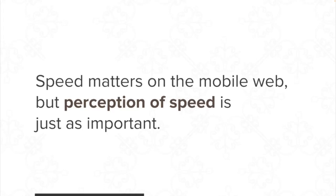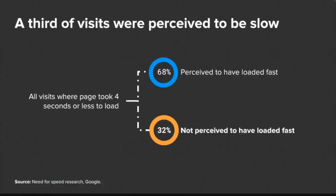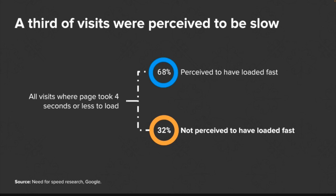Speed matters on the mobile web, but the perception of speed is just as important. We've looked at technical speed — now let's look at perceived speed. Remember Houston Airport: occupied time versus unoccupied time — you want to make sure you're distracting users. Interestingly, sites which are considered technically fast — a third of users, 32% — perceive them to have not loaded fast. Even when you've done a lot of technical optimization, users may still complain.